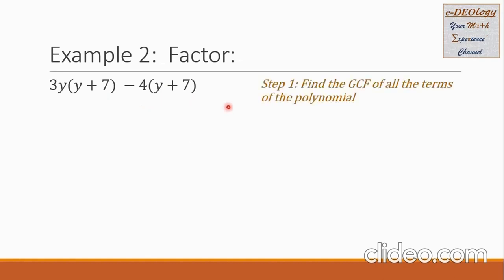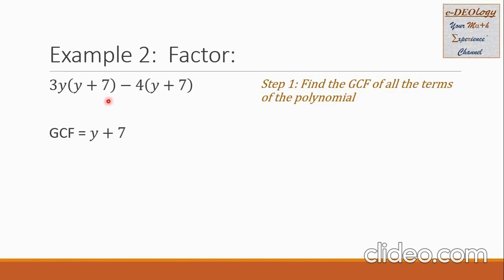Let us go to step 1: find the GCF of all the terms of the polynomial. Our GCF is y plus 7, which is common in the first group and in the second group. So the GCF is y plus 7.